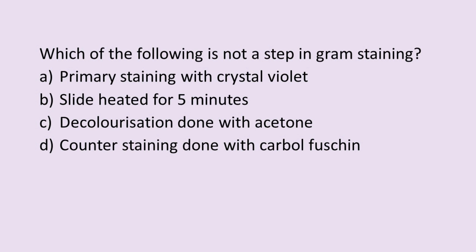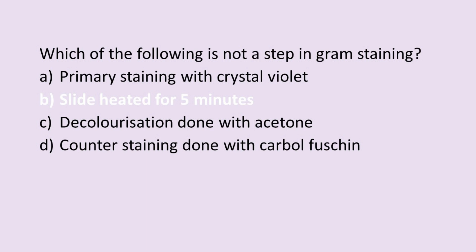Let's answer this question: Which of the following is not a step in Gram staining? Option A — primary staining is with crystal violet. Option B — slide heated for 5 minutes. Option C — decolorization done with acetone. Option D — counter staining done with carbol fuchsin. The answer is Option B, as heating the slide is a step in acid-fast staining, not Gram staining.